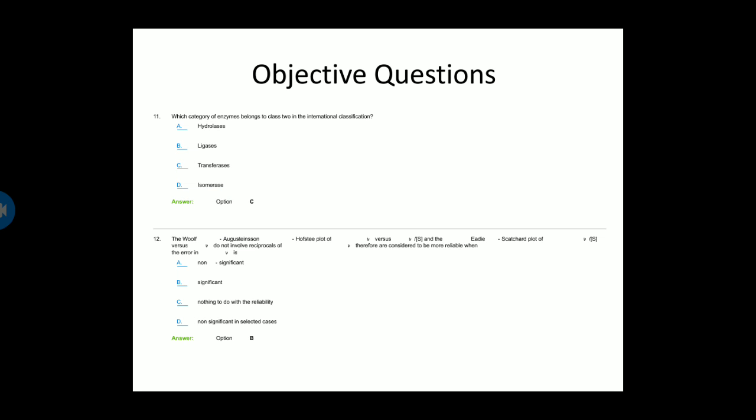Next question: The Woolf-Augustinsson-Hofstee plot is a plot of V vs S, and this plot does not involve the reciprocal of V. Therefore it is considered more reliable when the error is — option A is non-significant, option B is significant, option C is nothing to do with reliability, option D is non-significant in selected cases. Option B is the correct answer — significant.